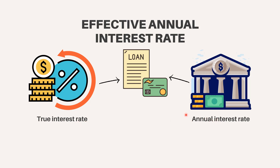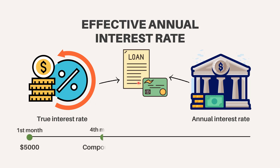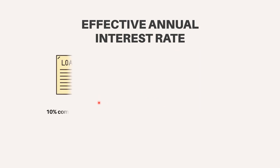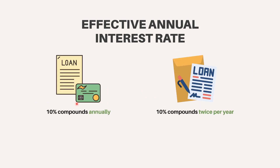The effective annual interest rate describes the true interest rate associated with an investment or loan. The most important feature of the effective annual interest rate is that it takes into account the fact that more frequent compounding periods will lead to a higher effective interest rate. Suppose, for instance, you have two loans, and each has a stated interest rate of 10%, in which one compounds annually and the other compounds twice per year. Even though they both have a stated interest rate of 10%, the effective annual interest rate of the loan that compounds twice per year will be higher.